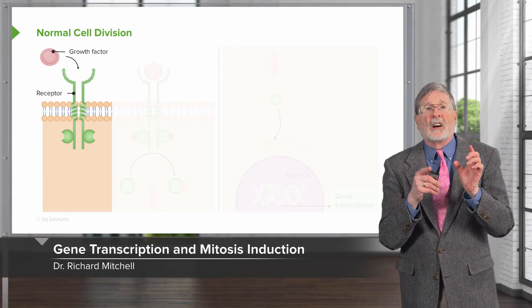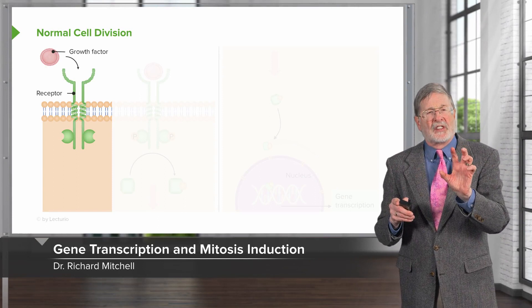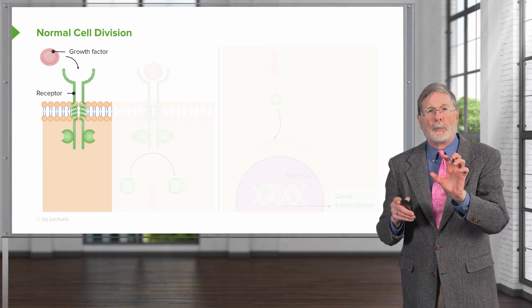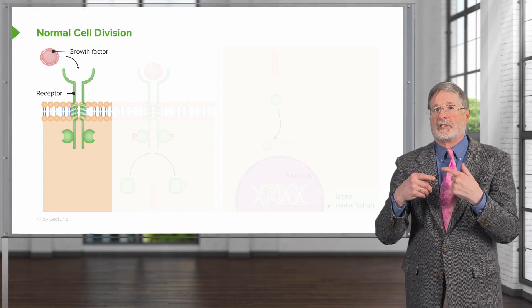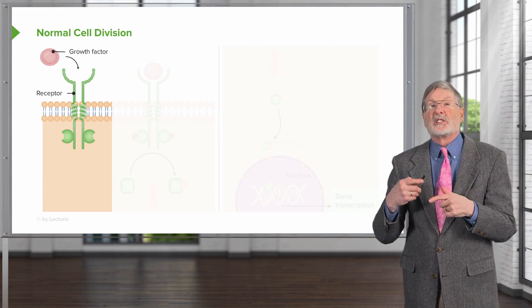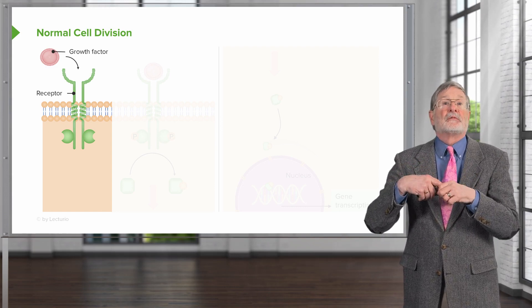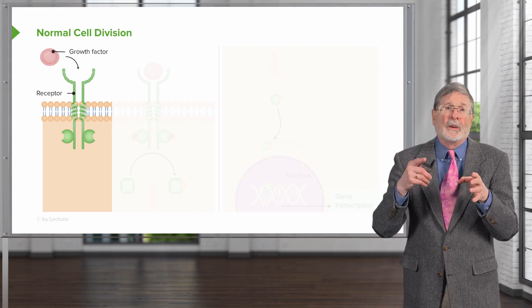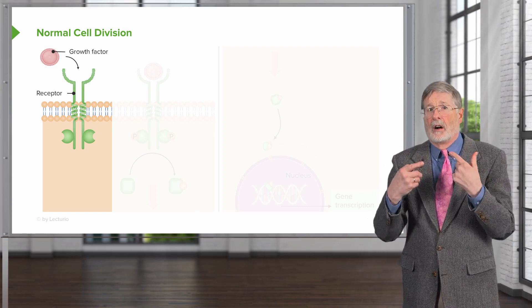Okay, we're going to move on now and talk about normal cell division, because you have to understand the normal cell pathways that are going to drive cellular proliferation so that we can understand what goes wrong when we have loss of tumor suppressors or the expansion of oncogenes.